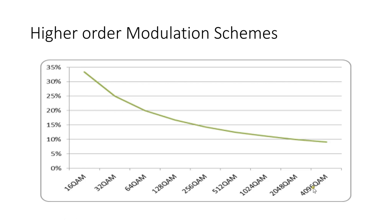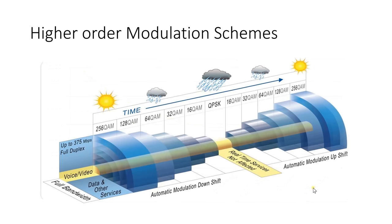If you increase modulation beyond 4096 QAM, the system gain becomes very low and it cannot be used in high-interference environments or adverse weather conditions. However, with adaptive modulation, when atmospheric conditions or interference levels are high, we can step down the modulation, and when conditions improve, step it back up. With proper QoS settings, this saves high-priority traffic on the microwave link.